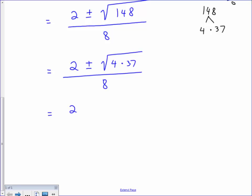Now, underneath the root, I'm going to take the square root of 4. Square root of 4 is 2. It comes out from under the root. I can't take the square root of 37 because it's prime.